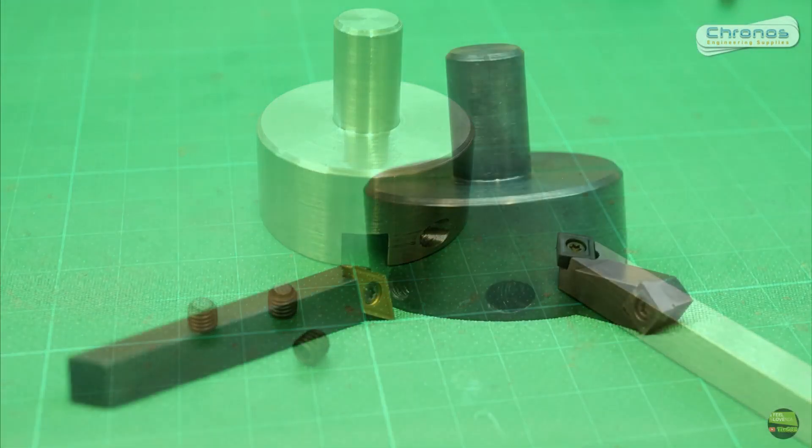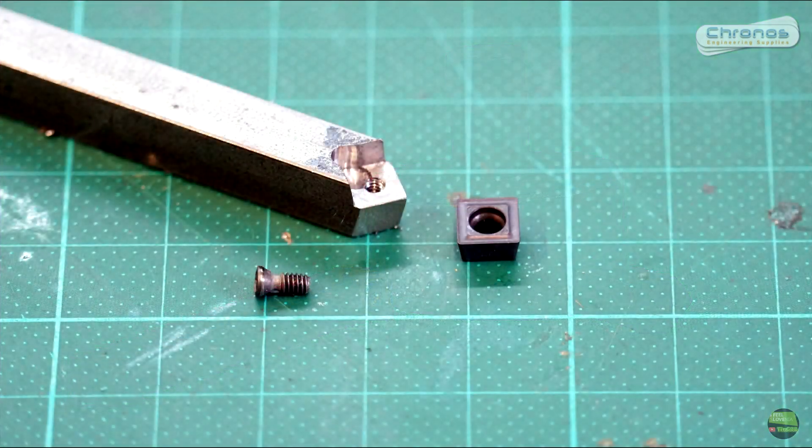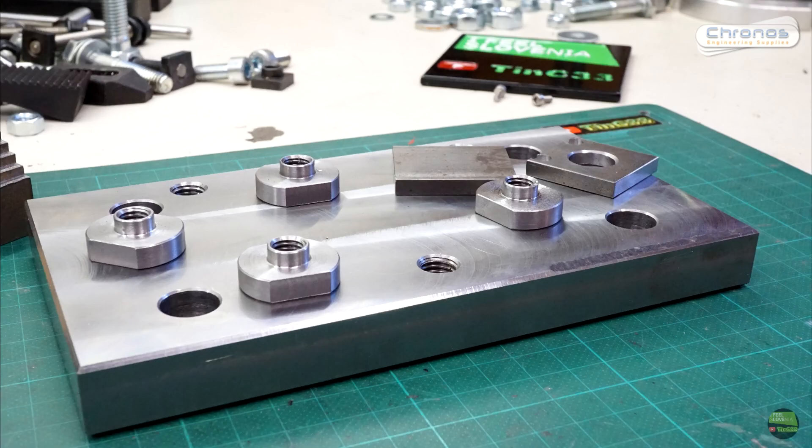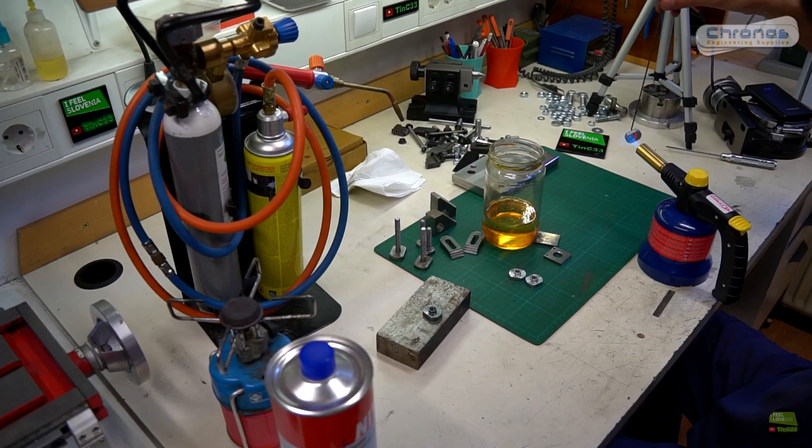When I make some tools I like to protect them with black. It's a really thin protection from dry rust. It's not protection for outside like paint or any electroplating process. There are a few different processes to get the same result.